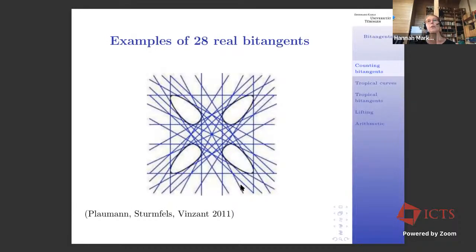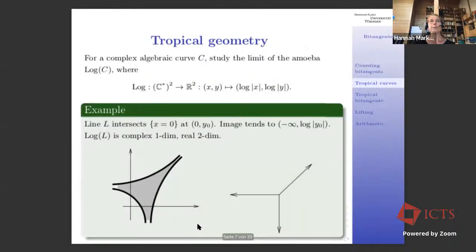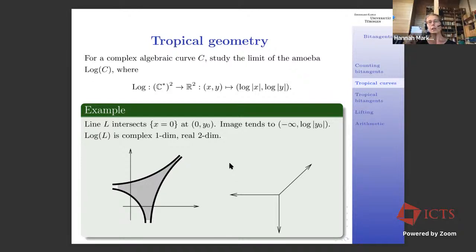And now we're all willing to believe that there are indeed 28, because it's symmetric — you do this for every oval and then you have your 28 bitangents. This is another picture of a real plane quartic with 28 totally real bitangents. This picture is taken from a paper by Plaumann, Sturmfels, and Vinzant, where they discuss how to compute bitangents for plane quartics.